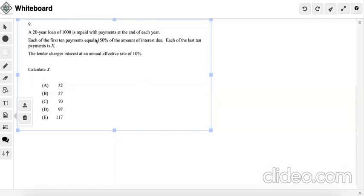Okay, so a 20-year loan of $1,000 is repaid with payments at the end of each year. So we got 20 years and we want to pay $1,000.